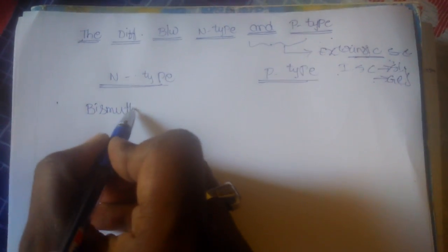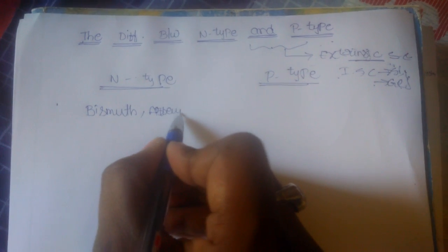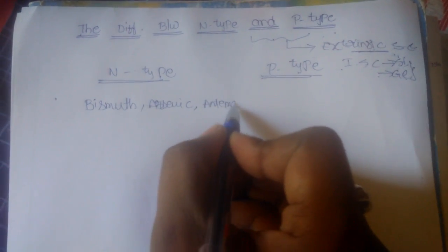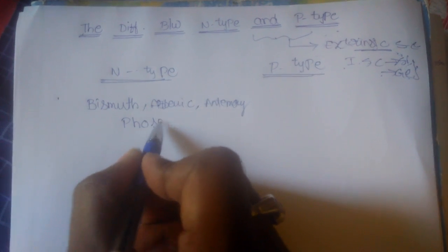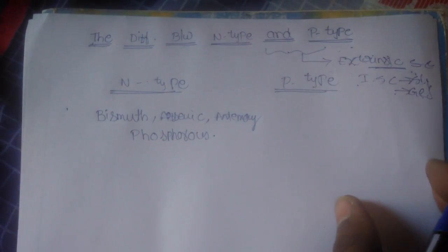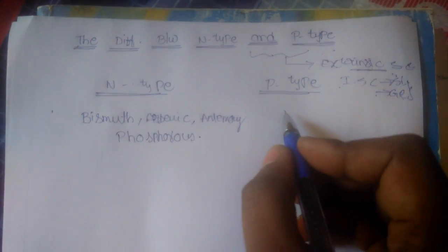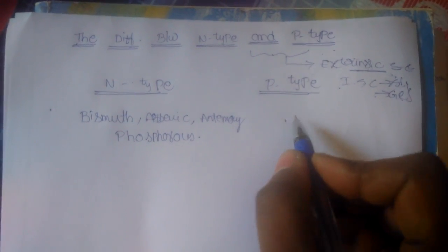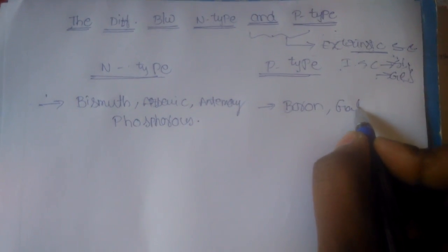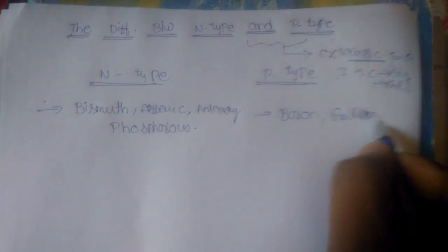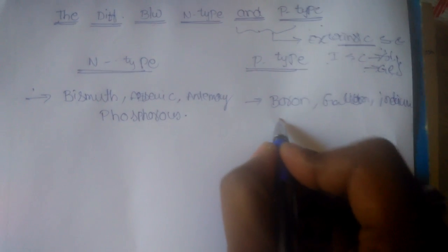I am giving you a trick to find out n-type and p-type materials. In n-type material, the elements are: bismuth, arsenic, antimony, and phosphorus. In p-type material, the elements are: boron, gallium, indium, and aluminum.